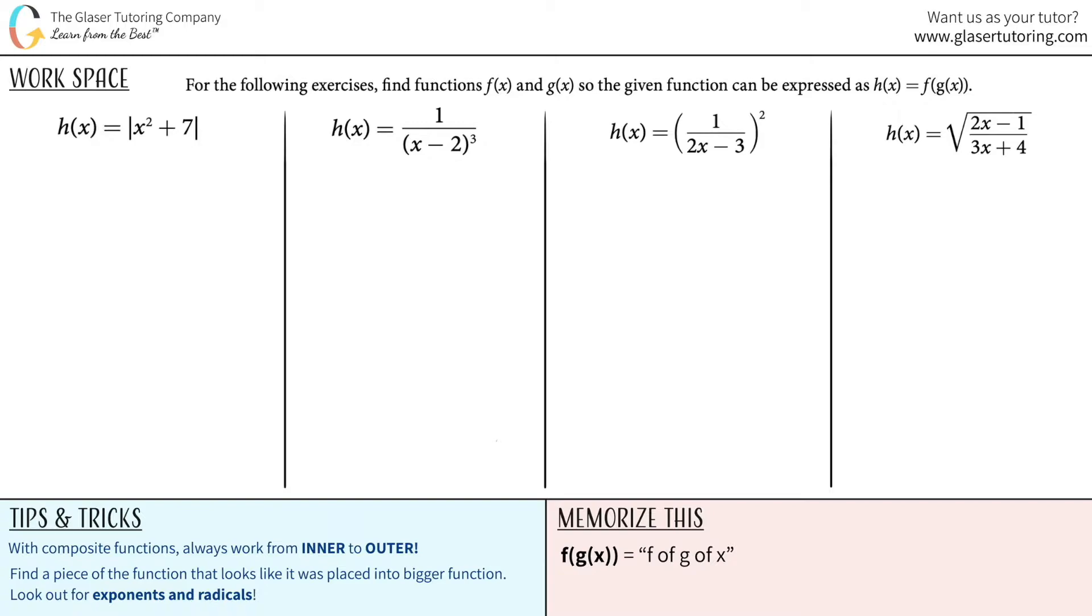For the following exercises, find functions f of x and g of x so the given function can be expressed as h of x equals f of g of x. Composite functions. I know it's a composite function because I know this type of notation. But the only difference here is they gave you the end composite function and we need to find the individual pieces. We need to find what f of x was and what g of x was.